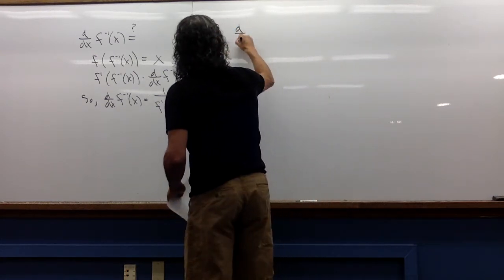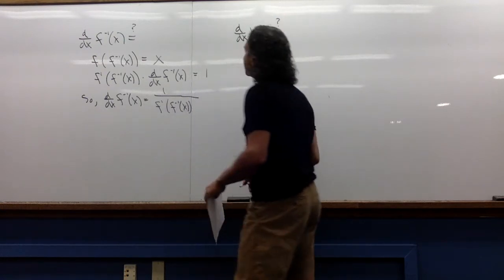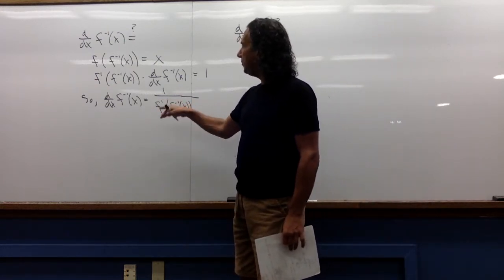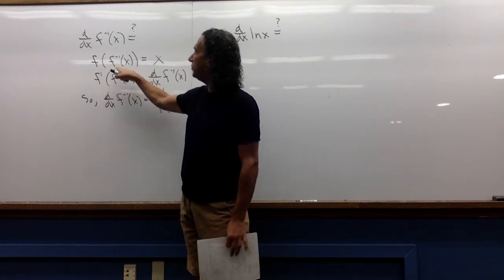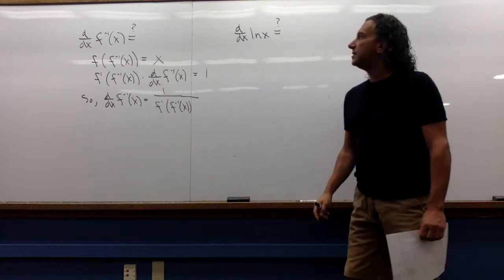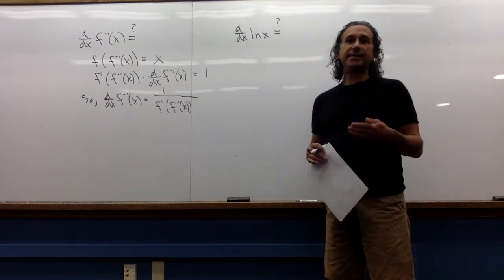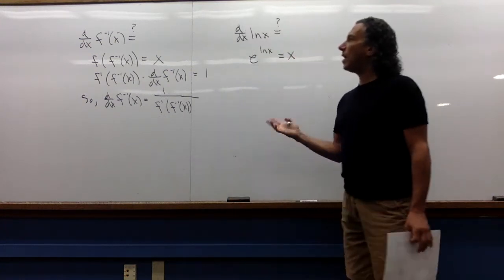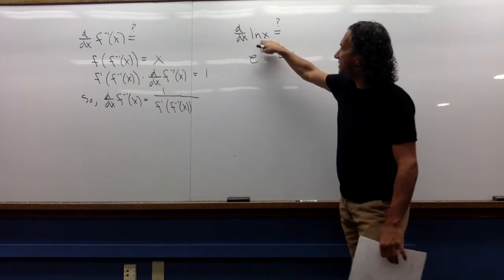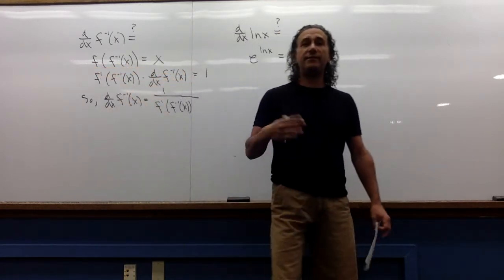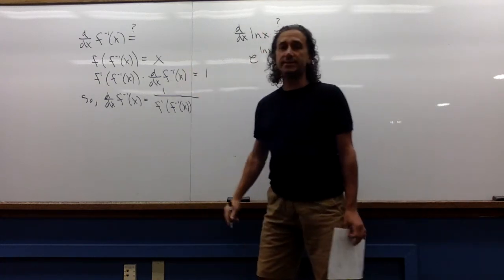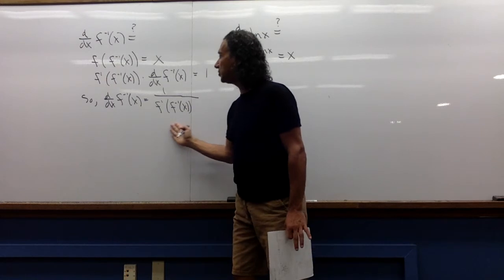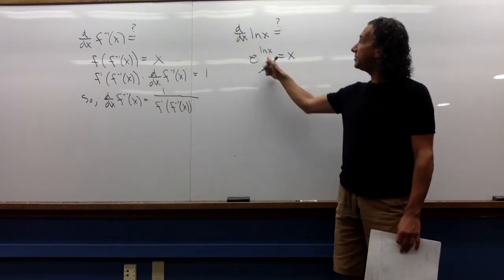As a first example, let's look for the derivative of the natural log of x. The way this process works is: I know the derivative of the outside function, I composed it with something, and I got x. We know that the inverse function of the natural log is e to the x, and we also know that e to the natural log of x is x. I'm starting it this way because I'm looking for the derivative of ln(x). I don't know that derivative, but I do know the derivative of e to the x, and I do know the derivative of x.